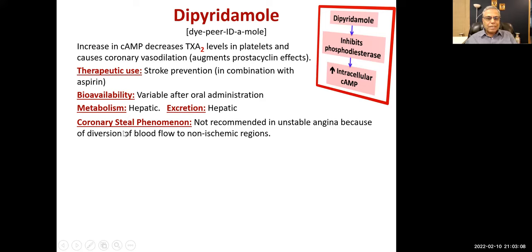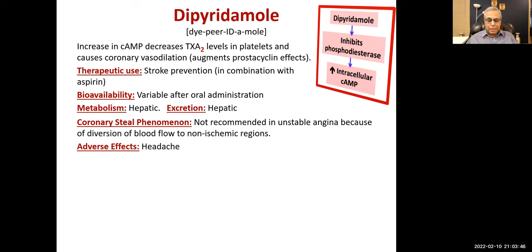What is coronary steal syndrome? In the heart, the coronary arteries which are healthy dilate more than the obstructed arteries. The arteries causing angina have atherosclerosis and when you give a vasodilator, they do not dilate as much as healthy arteries. So more blood flows to healthy regions, stealing blood from ischemic regions — that's why it is known as coronary steal phenomenon. Adverse effects include headache and orthostatic hypotension, which are adverse effects of all vasodilators.